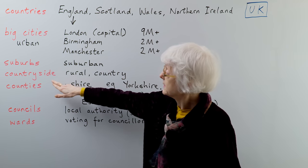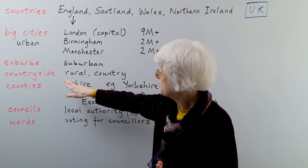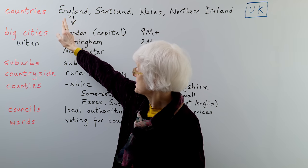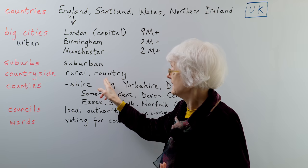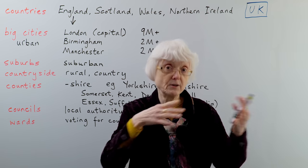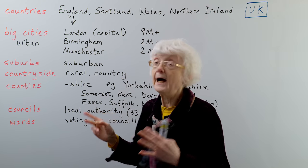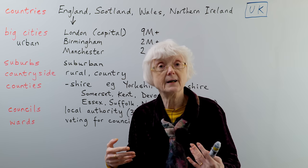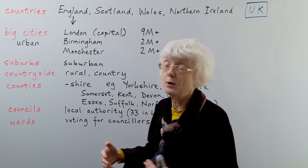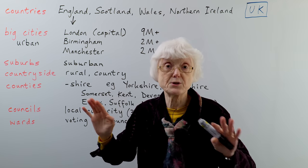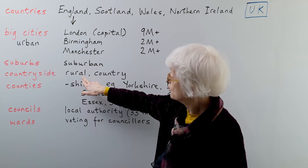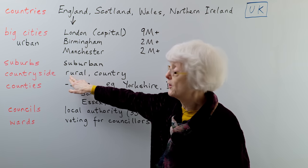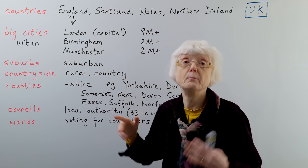Coming further out again, you get the countryside. It's a bit confusing that the word 'country' comes here, as well as being a country like England. The countryside — or 'the country' — can actually mean out in the countryside where it's more fields and farming, agriculture, farm animals and so on. Not so many buildings, but lots of fields and trees. That's called rural. So we've got urban, suburban and rural, referring to the countryside with farming, agriculture.